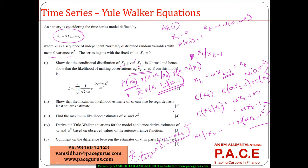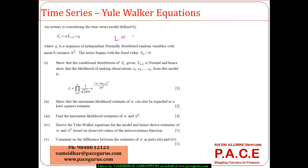The simplification gives the likelihood function proportional to sigma to the power minus n, times e to the power of minus 1 over 2 sigma squared, times the summation from i equal to 1 to n of (xi minus alpha times xi minus 1) squared. To maximize this likelihood is equivalent to minimizing this sum of squares — this is also regarded as a least squares estimate.